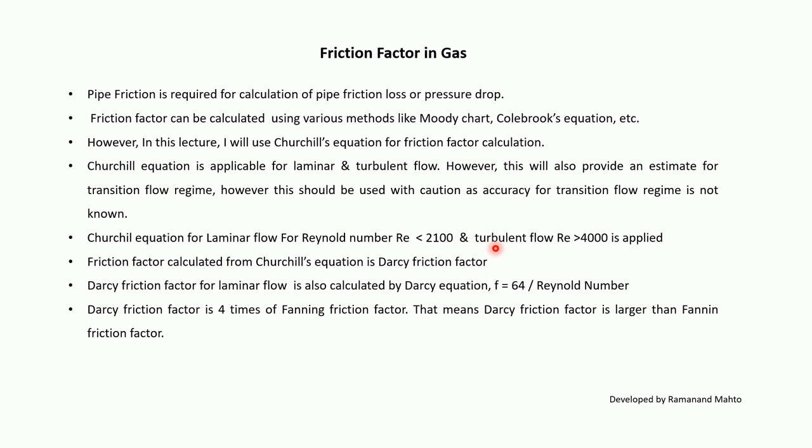Churchill equation for laminar flow is for Reynolds number less than 2100, and turbulent flow greater than 4000. Friction factor calculated from the Churchill equation is a Darcy friction factor. For laminar flow, the Darcy equation gives f = 64 / Re. The Darcy friction factor is 4 times the Fanning friction factor, meaning the Darcy friction factor is larger.